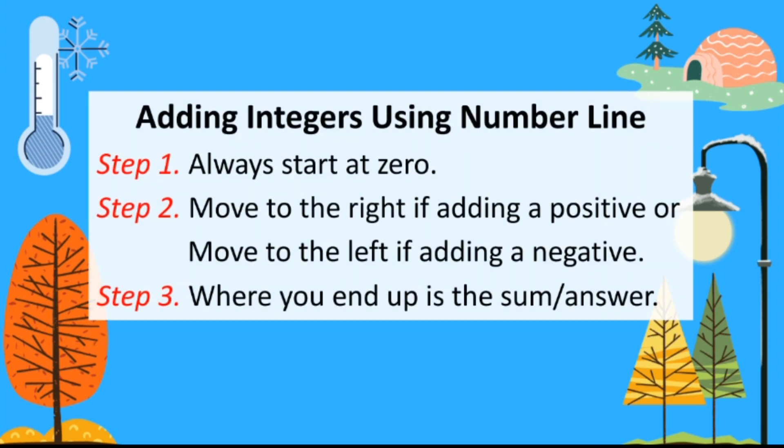Adding integers using number line. Step 1: Always start at zero. Step 2: Move to the right if adding a positive, or move to the left if adding a negative. Step 3: Where you end up is the sum or answer.